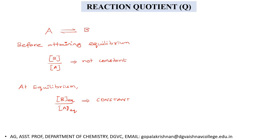First, I am going to discuss what is reaction quotient. Reaction quotient is usually represented as capital Q. Consider a reaction where A is the reactant and B is the product — it is a reversible reaction. A gives product B, and B reacts to form A again. In a reversible reaction, the rate of the forward reaction and the rate of the backward reaction are initially not equal. If they are not equal, we can say that the reaction has not attained equilibrium.